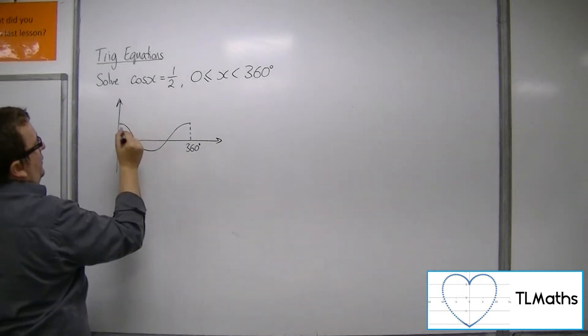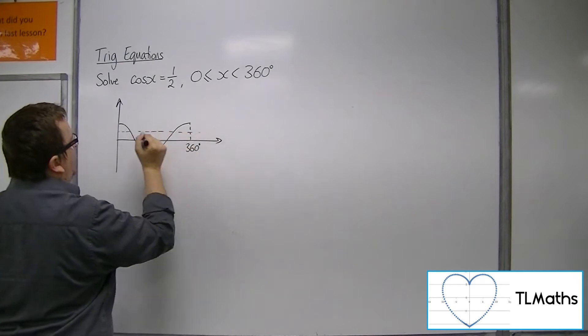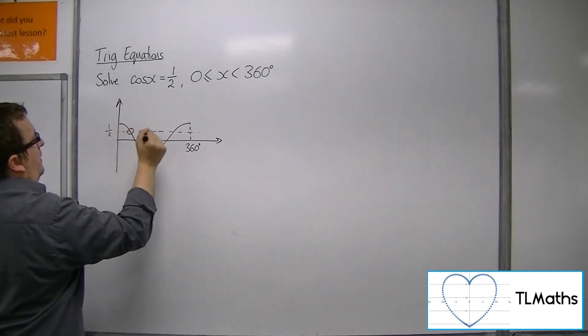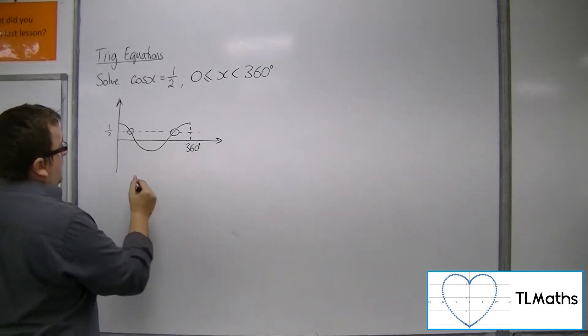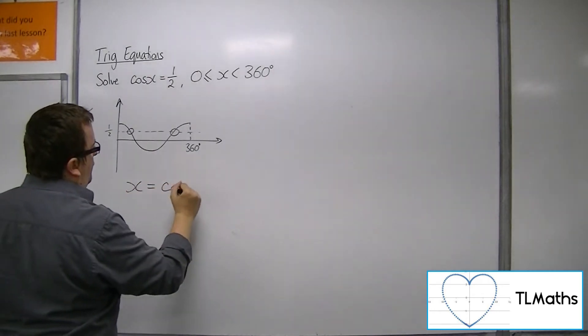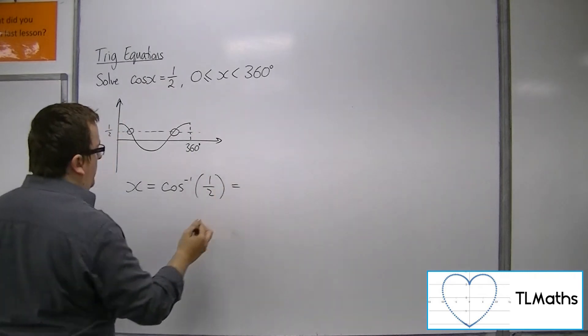So cos x is a half. Half, once again, will be a horizontal line. It's going to cross the cos curve twice. So we can find the first solution by finding the inverse cosine of a half.